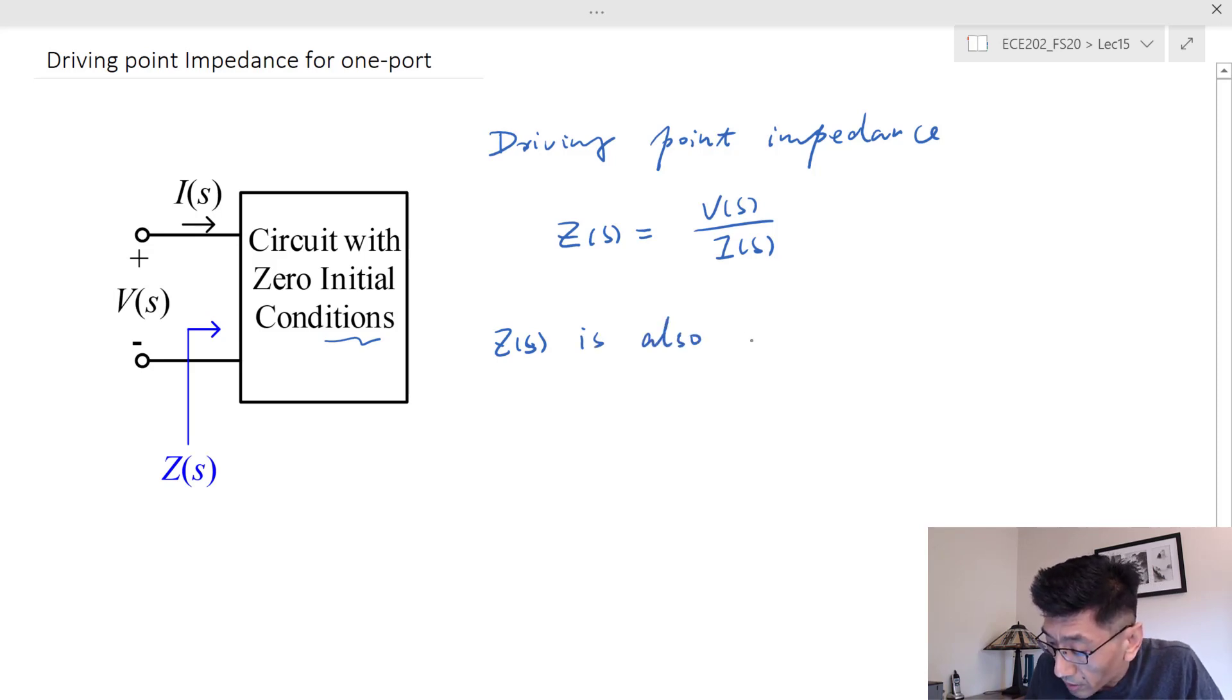Z(s) is also known as the input impedance, or the equivalent impedance.